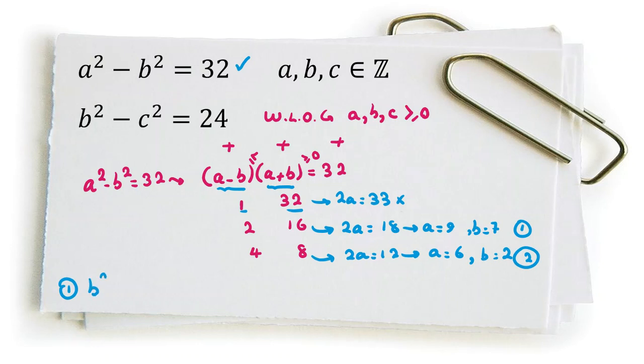If we consider the first case, b squared minus c squared will be 7 squared, 49, minus c squared. If we use the second equation, it equals 24. So if we take negative c squared to the right-hand side, 49 minus 24 is 25 equals c squared, so c is 5.